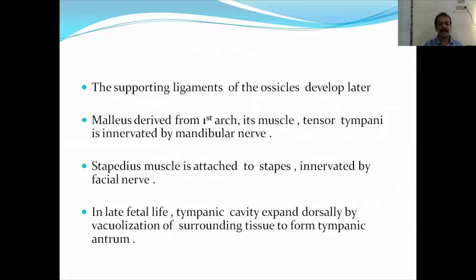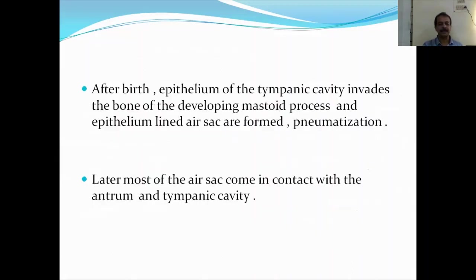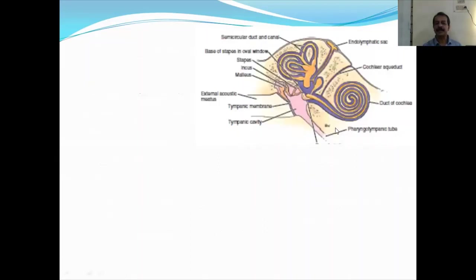In late fetal life, the tympanic cavity expands dorsally by vacuolation of surrounding tissue to form the tympanic antrum. After birth, the epithelium of the tympanic cavity invades the bone of the developing mastoid process and epithelium-lined air sacs are formed — this is known as pneumatization. Later, most of the air sacs come in contact with the antrum and the tympanic cavity. Here you can see the external auditory meatus, the ossicles — malleus, incus, and stapes — the semicircular canals, and the cochlea.